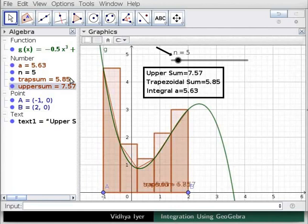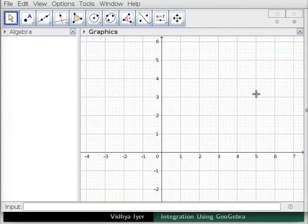Observe the values in the text box as you drag slider n. Trapsum is a better approximation of AUC at high n values. Integrating such sums from a to b at high values of n will give us the AUC. Let us open a new GeoGebra window.